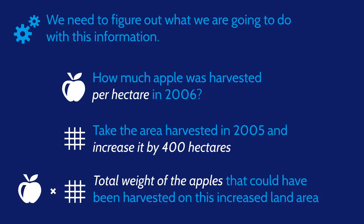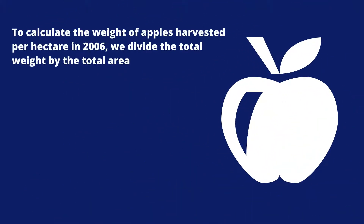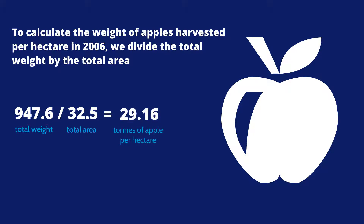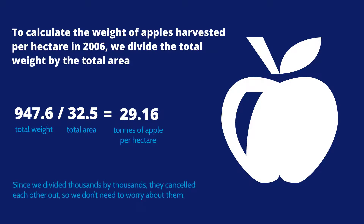To calculate the weight of apples harvested per hectare in 2006, we divide the total weight by the total area: 947.6 divided by 32.5, which results in 29.16 tonnes of apple per hectare. Since both the total weight and the land area were given in thousands, dividing thousands by thousands cancels them out, so we don't need to worry about them anymore.